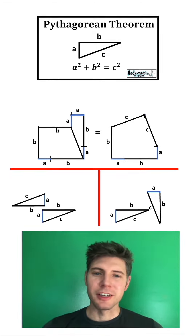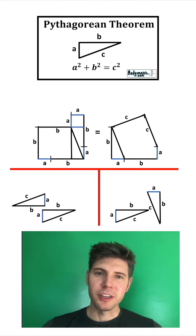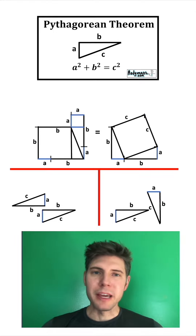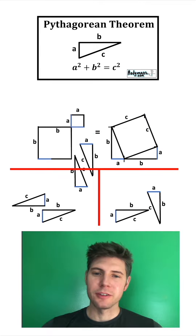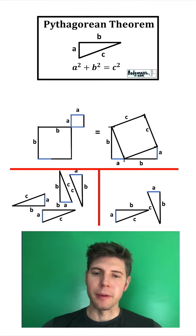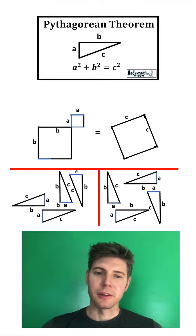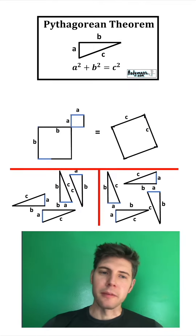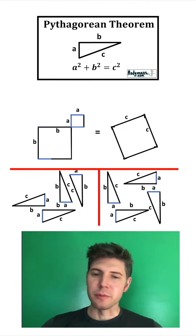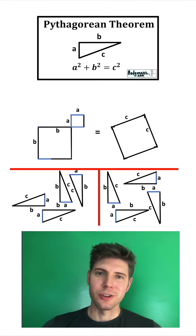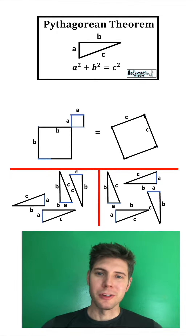Now let's make some more cuts here, here, and here, and also here and here. We've now made more of these ABC triangles and we can pull them out. Out of both sides, we've pulled four of these ABC triangles, so they should both still be equal.